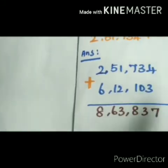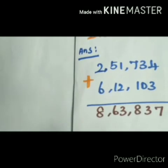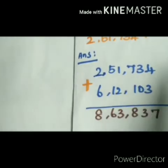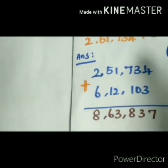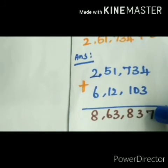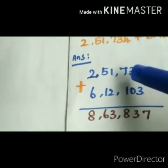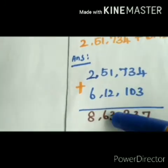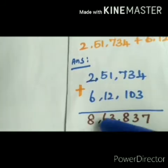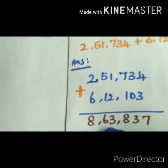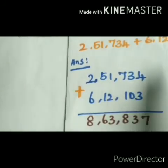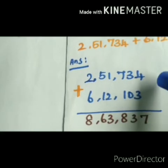Let us start. If you are adding like this, you get: 4 plus 3 is 7, 3 plus 0 is 3, 7 plus 1 is 8, 1 plus 2 is 3. Going like that, the answer is 8,63,837.